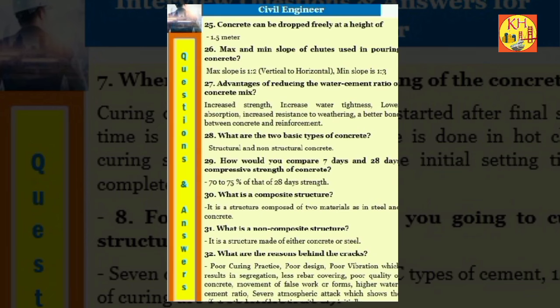Question 25: Concrete can be dropped freely at a height of 1.5 meter. Question 26: Max and min slope of shoots used in pouring concrete. Max slope is 1 to 2 vertical to horizontal. Min slope is 1 to 3. Question 27: Advantages of reducing the water-cement ratio of concrete mix: Increased strength, increase water tightness, lower absorption, increased resistance to weathering, a better bond between concrete and reinforcement.